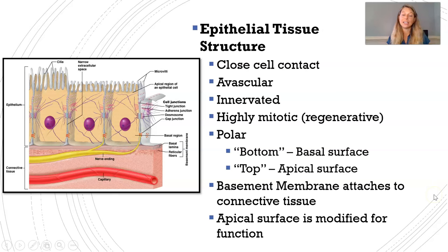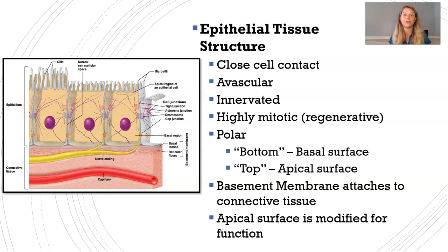Epithelial tissue is structured in a specific way. The cells are very closely in contact, touching one another. Epithelial tissue is avascular — it does not have its own blood supply. Its blood supply comes from the connective tissue it is attached to. It is, however, innervated, meaning nerves do run through it. It is highly mitotic, meaning it is easily capable of regeneration — these are cheap cells that can be easily replaced.